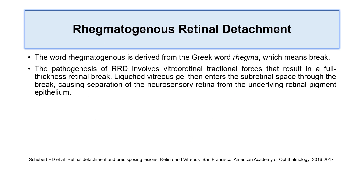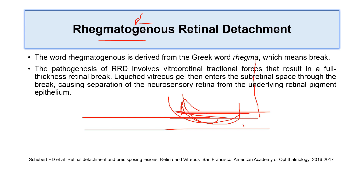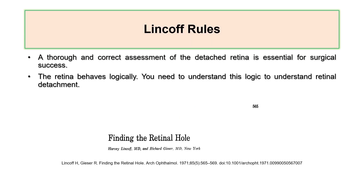Rhegmatogenous is a Greek word meaning 'break.' Rhegmatogenous retinal detachment results from a break caused by a vitreoretinal tractional force leading to a full-thickness break. Liquefied vitreous fluid then passes through this break into the subretinal space, causing separation between the neurosensory retinal layers and the underlying retinal pigment epithelium (RPE).